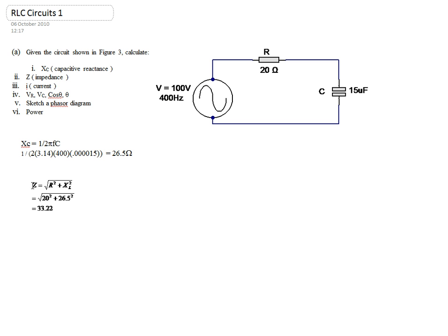Now that we have calculated Z, we can calculate the current I. The current I is simply the supply voltage divided by the impedance Z. So I is equal to V over Z, which is 100 volts divided by our impedance of 33.22 ohms. That gives us a current of 3.01 amps.